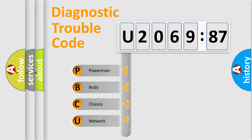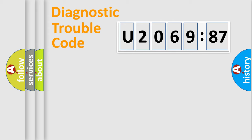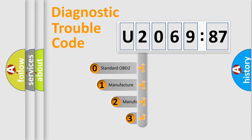We divide the electric system of automobile into four basic units: Powertrain, Body, Chassis, and Network. This distribution is defined in the first character code.